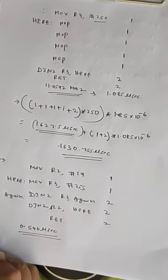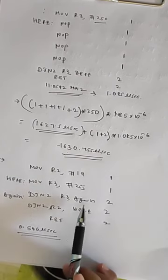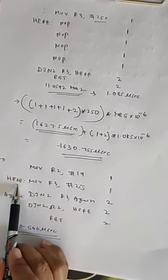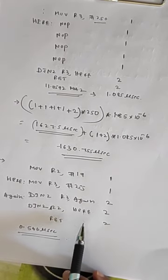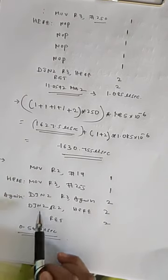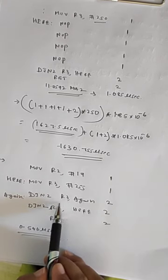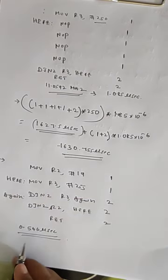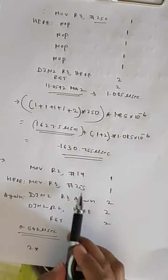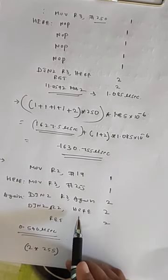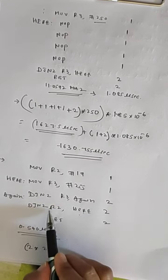This example has a nested loop. To calculate the time delay we start from the inner loop. The inner loop contains only DJNZ R3 which takes two machine cycles, and this instruction repeats 255 times. So two machine cycles multiplied by 255 gives the inner loop cycles. Then we move to the outer loop, DJNZ R2.